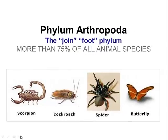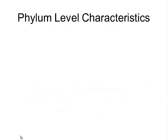Alright ladies and gentlemen, welcome back. We are on our final phylum of the invertebrates — this is Phylum Arthropoda. The name essentially means 'joint foot' and it makes up 75 percent of all animal species. Most are quite familiar: insects, spiders, cockroaches, scorpions, and then there'll probably be a few that you're not quite as familiar with.